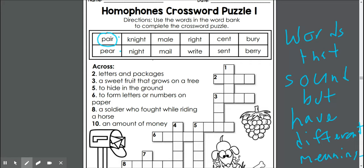So we're going to be doing a crossword puzzle. Each one gives us clues. For this one, it says across. We're going to look for number two across. We're going to find a word that says letters and packages.